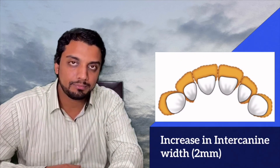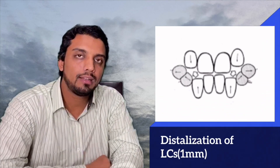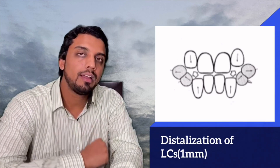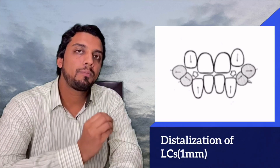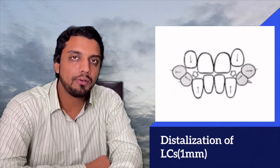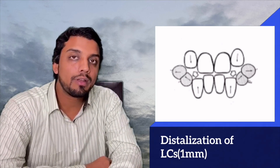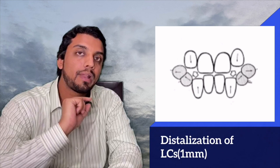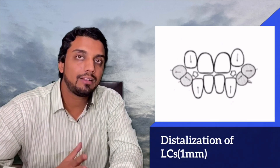Apart from this, there can be a slight distal repositioning of the lower primary canine. Because the primate space is distal to the primary canine in the mandible, when the lateral incisors erupt they push the lower canine slightly distally. This slight distal repositioning of the lower primary canine provides around one millimeter of extra space for the lower incisors. This distal repositioning happens only in the mandible, as the space is on the distal side of the lower primary canine.